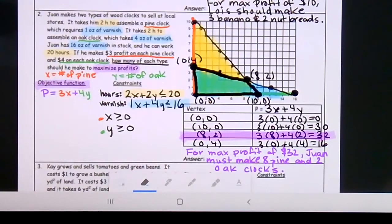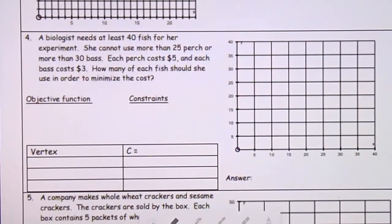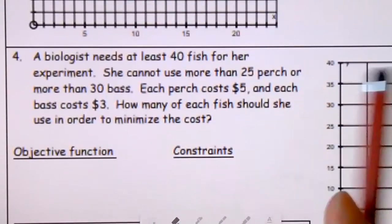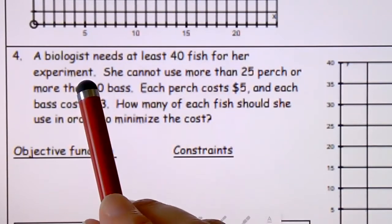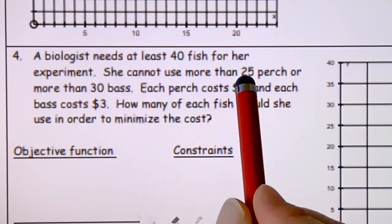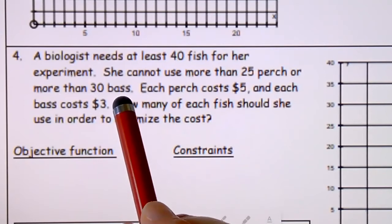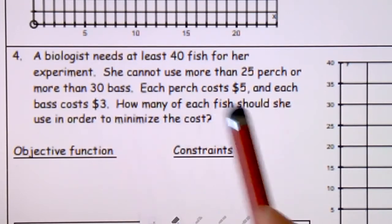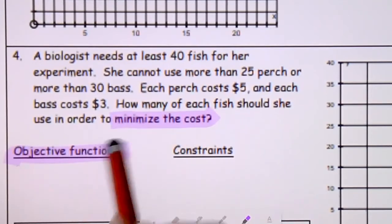Now we're moving on to problem four — I'm skipping to this one because it involves minimizing instead of maximizing, and it also introduces some different types of constraints on X and Y that we haven't seen before, including shading above a line.